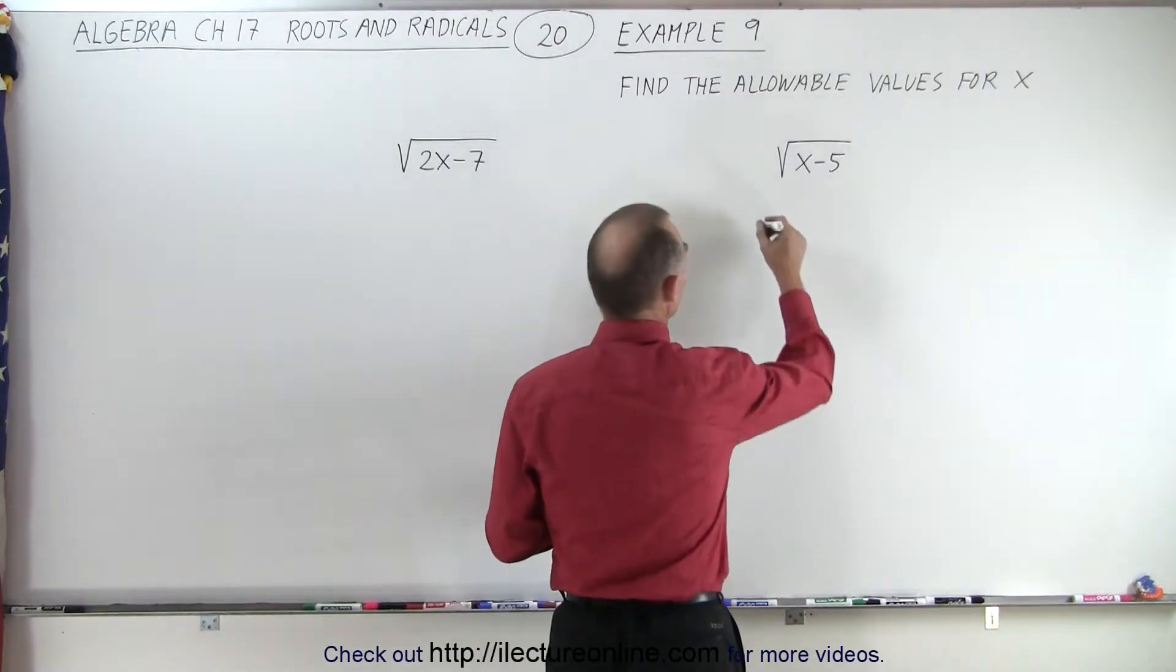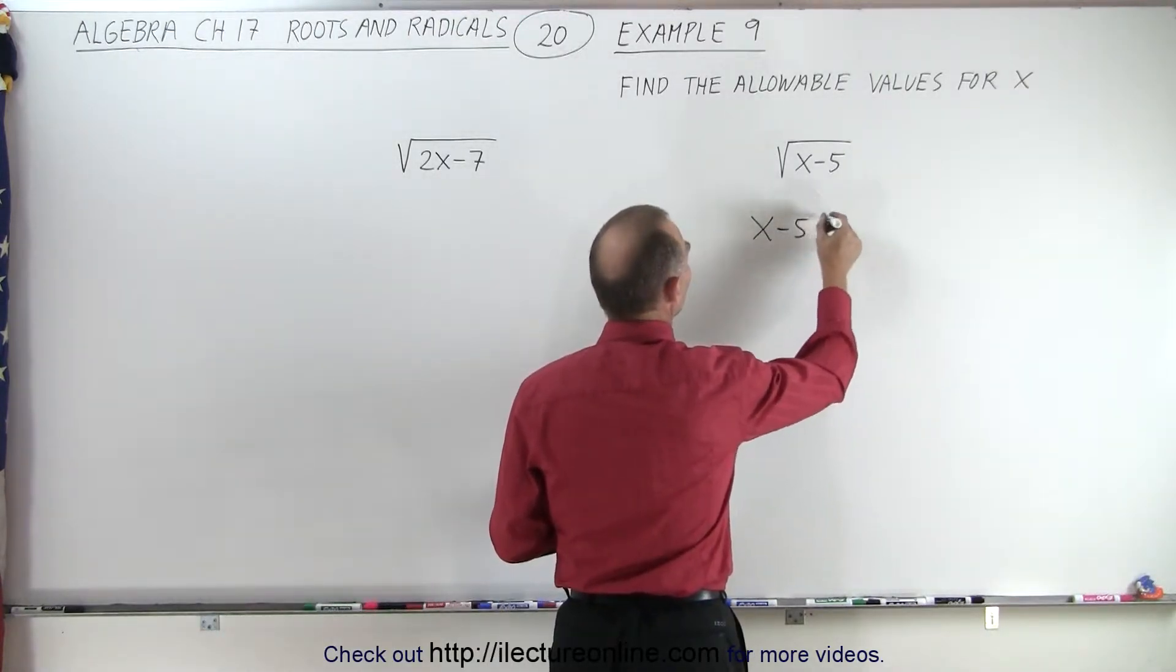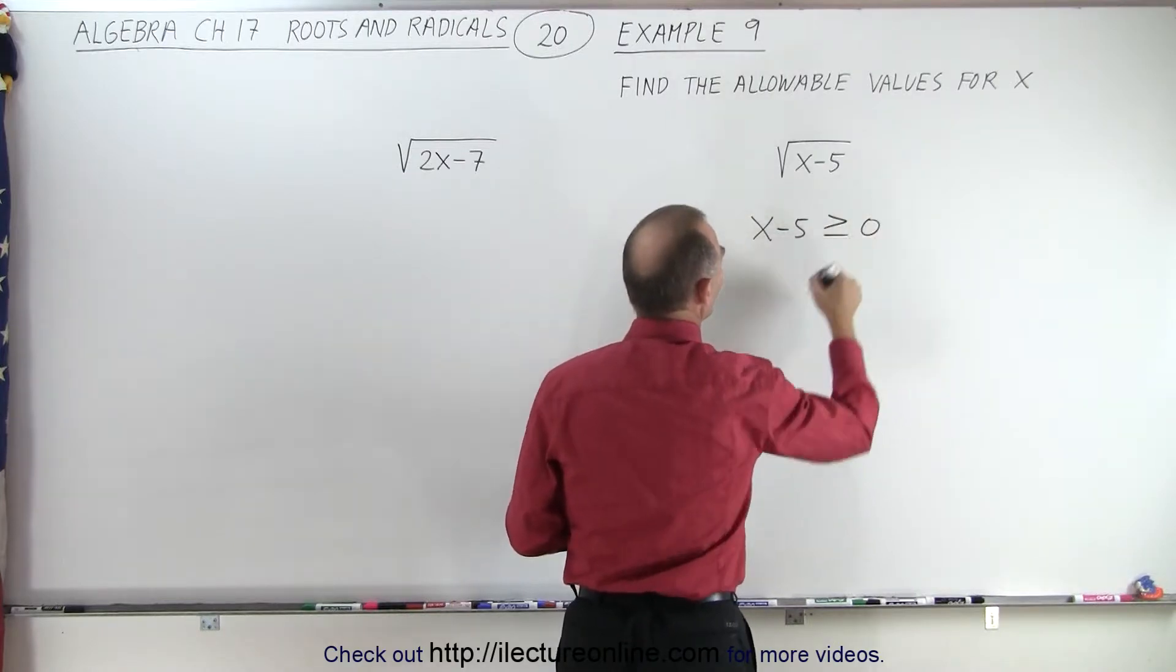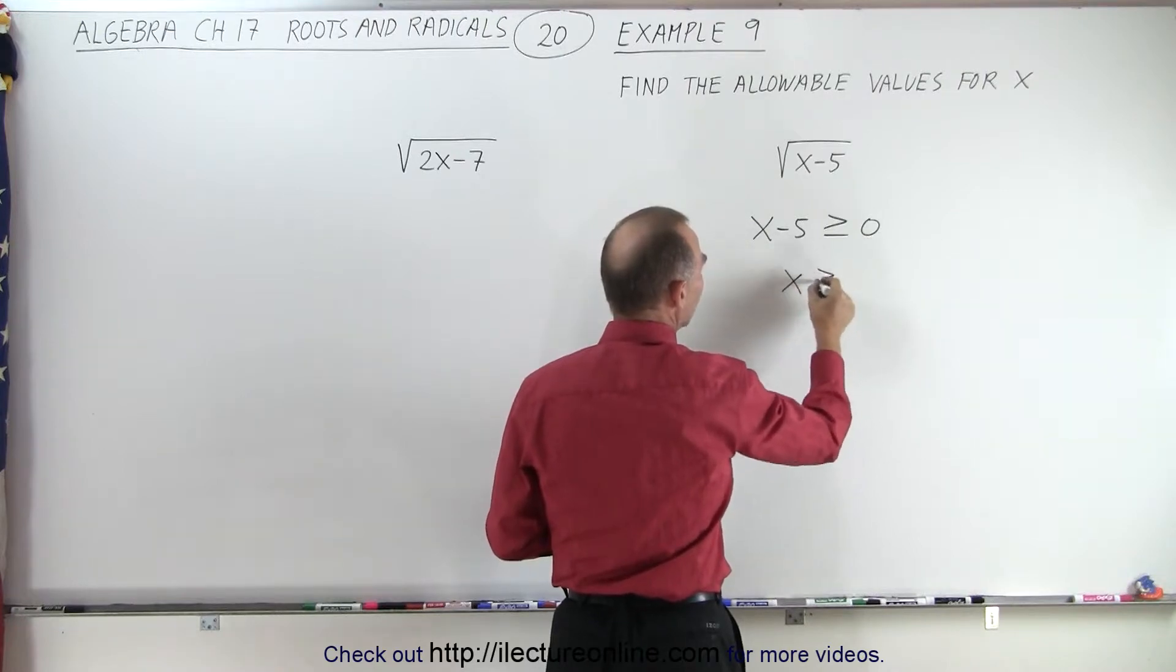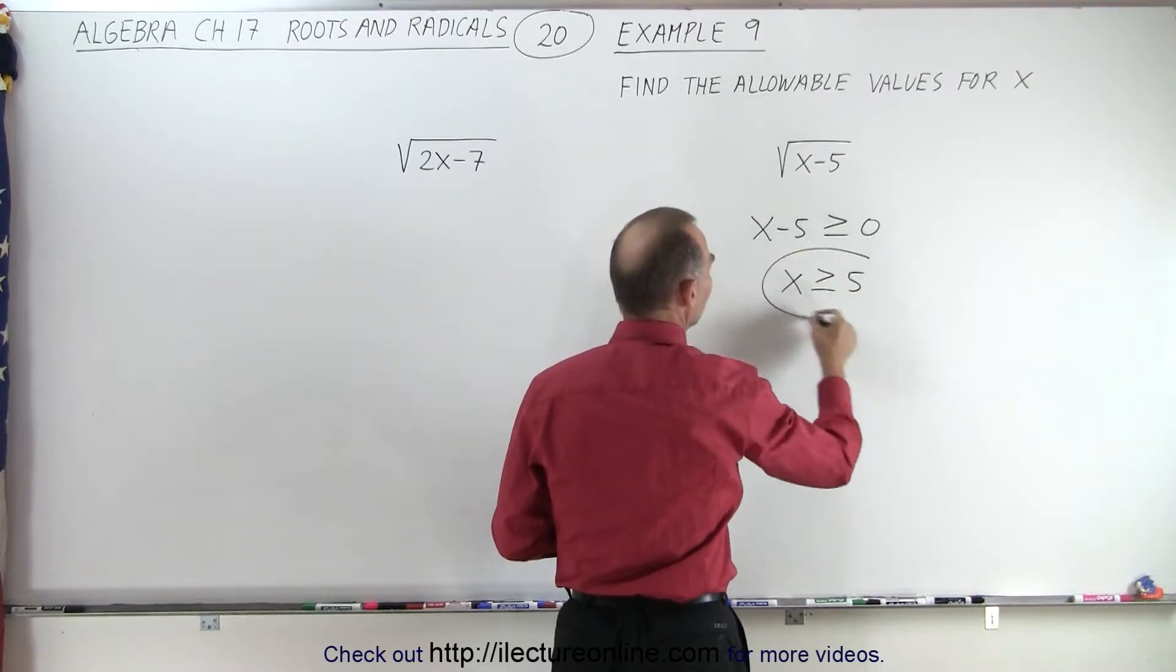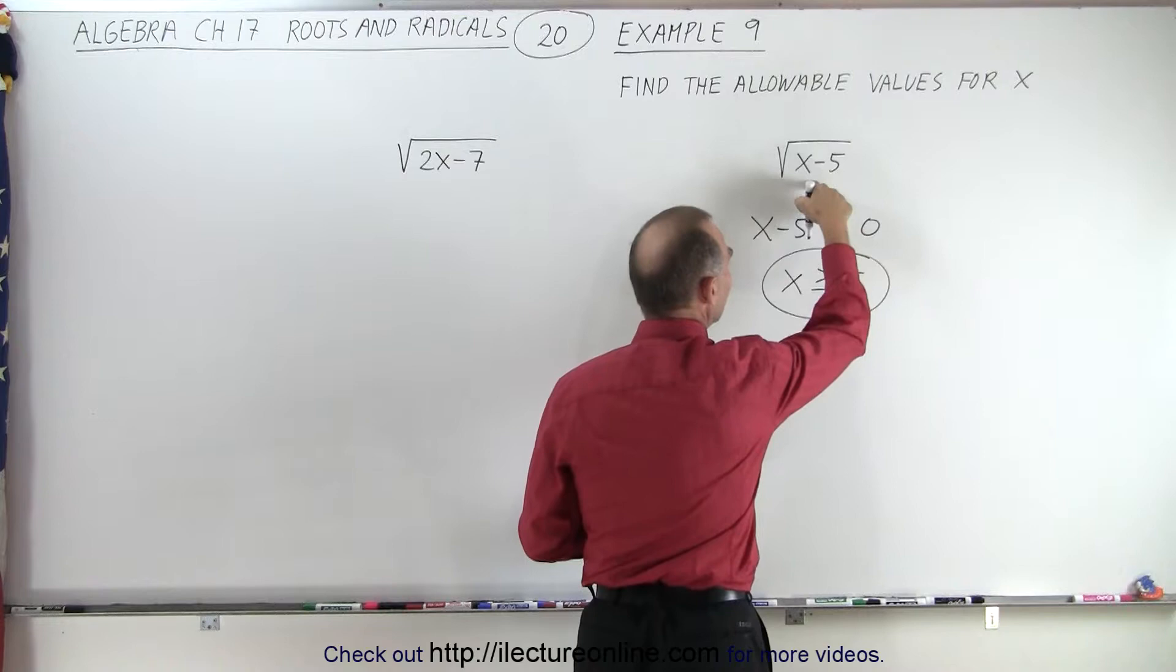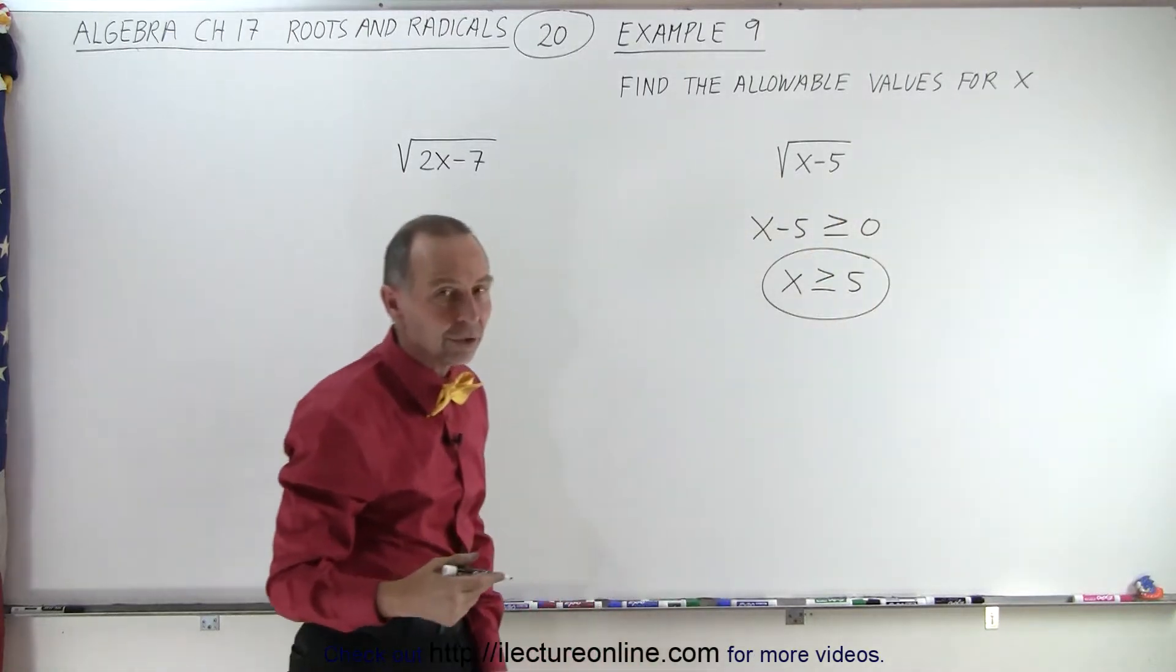In other words, in this case, we must make sure that x minus 5 is greater than or equal to 0. Moving the negative 5 over to the other side, becoming positive, x must be greater than or equal to 5. So this is a necessary condition for this to have a real value answer.